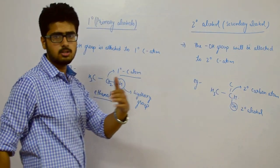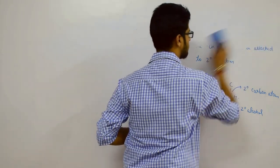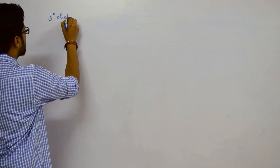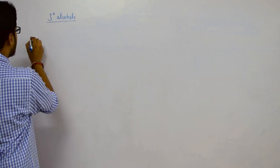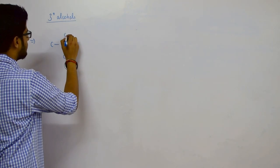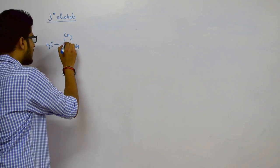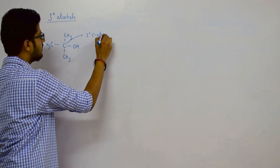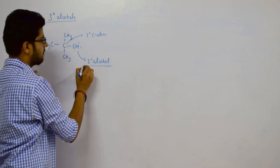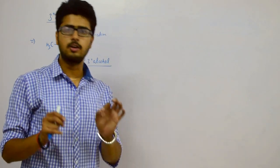In three-degree or tertiary alcohols, the OH group is attached to the tertiary carbon atom. So if the carbon carrying the OH group is a tertiary carbon, this compound is called a tertiary alcohol. Alcohols can thus be primary, secondary, or tertiary depending on the carbon atom to which the OH group is attached.